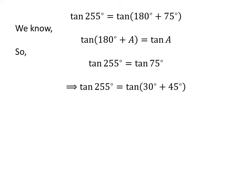Again, 75 degrees is equal to 30 degrees plus 45 degrees. So, tangent of 255 degrees is equal to tangent of 30 degrees plus 45 degrees.